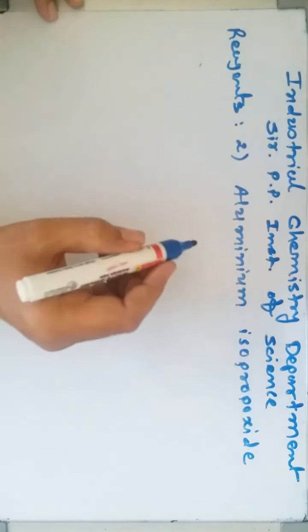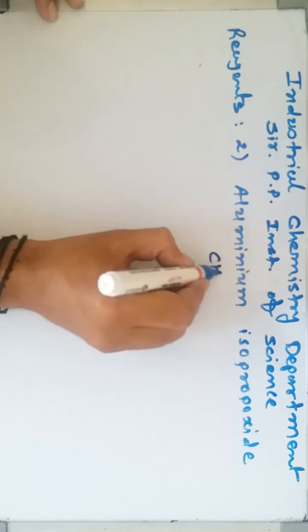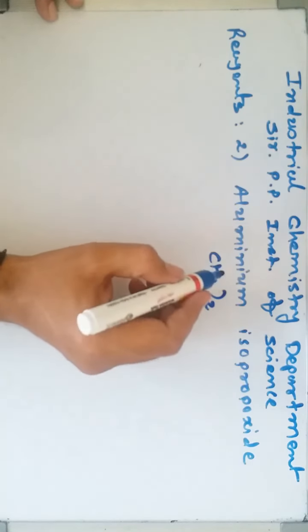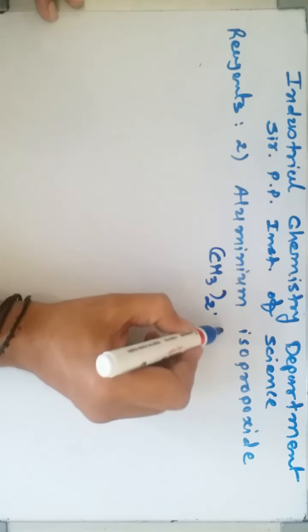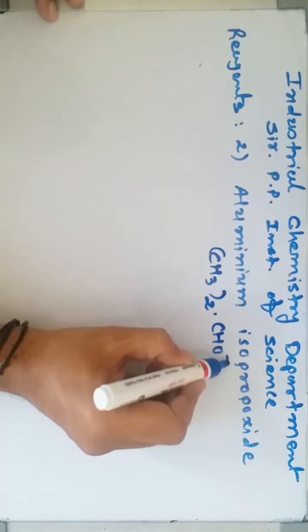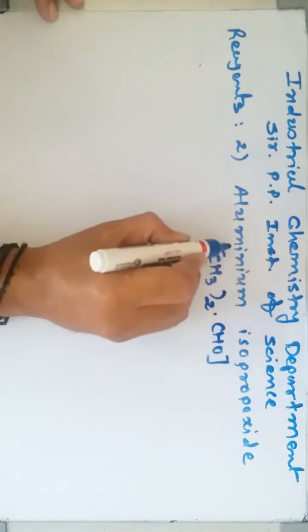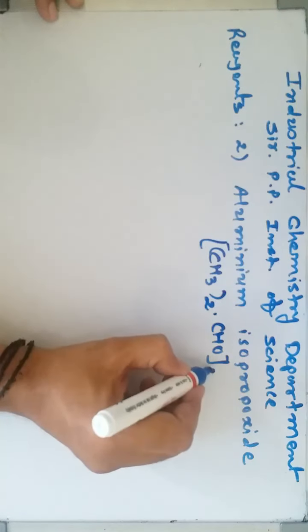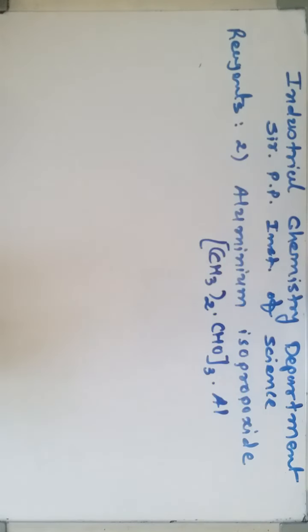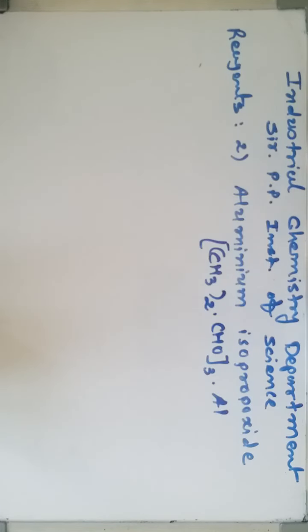Chemically, aluminum isopropoxide is written as (CH3)2CHO three times bonded to aluminum, Al[(CH3)2CHO]3. It is known as aluminum isopropoxide.